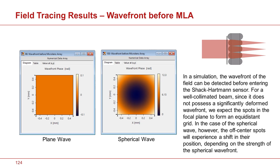Of course, in simulation, one of the good things about simulations is that we can actually look at the phase of a field directly — we have that field information. But in reality, we always need indirect measurement techniques in order to measure the phase of an electromagnetic field, the phase of the light. And one of the ways in which we can perform that measurement is using a Shack-Hartmann sensor.